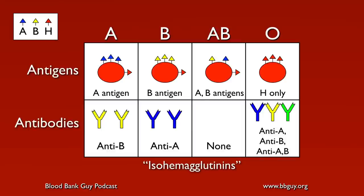Looking at the four main ABO blood groups: people who are blood group O have only the H antigen on their cell surface, and they have anti-A, anti-B, and anti-A,B antibodies. Group A has anti-B, group B has anti-A. In people who are blood group A, B, and AB, there's still a small amount of H antigen on the surface — it can be quite tiny, especially in AB people and A1 people, but there's a very small amount of residual H antigen.